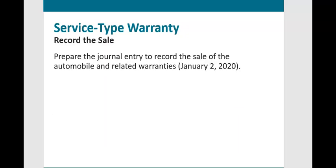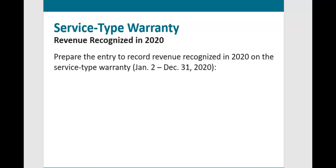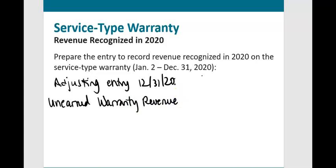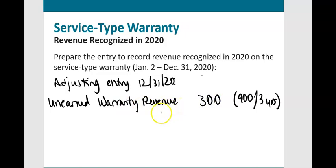At the end of the accounting period, the company records an adjusting entry because time has passed and each day the company earned a little bit of the unearned revenue. As an adjusting entry on 12-31-20, the company records one-third of the revenue earned: debit unearned warranty revenue $300 (since it was a $900 warranty covering three years), credit warranty revenue $300.